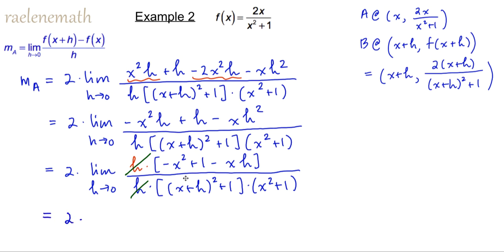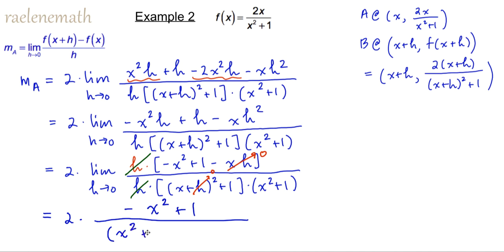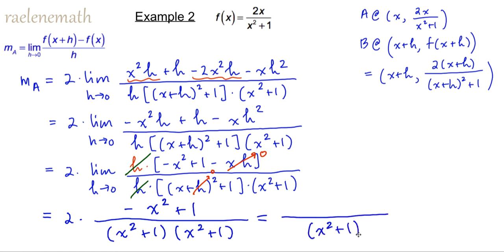When h is equal to zero, this third term is zero and that term is zero. So I end up with negative x squared plus 1 in the top, all over x squared plus 1 multiplied by another x squared plus 1. This is a formula that doesn't depend on h anymore — it's simply a function of x. Tidying it up, we get x squared plus 1 squared in the denominator, and I'll write the 1 in front because I like to lead with a positive term. Distributing the 2 through, we get the final tangent slope formula.